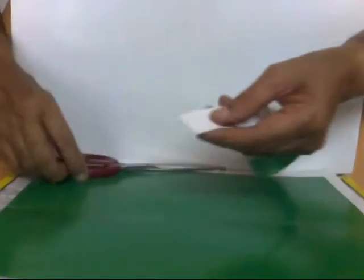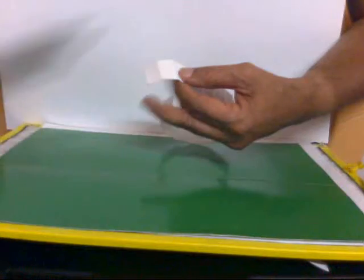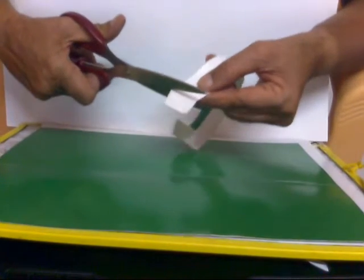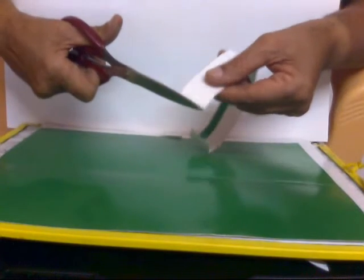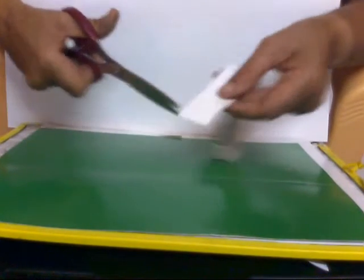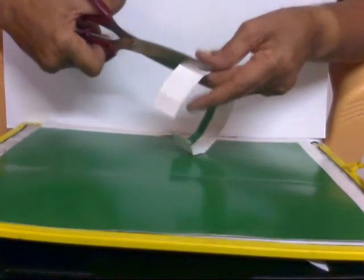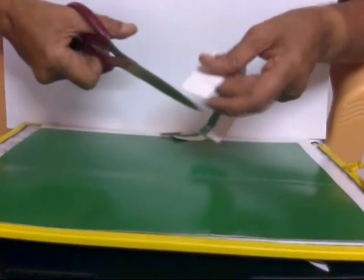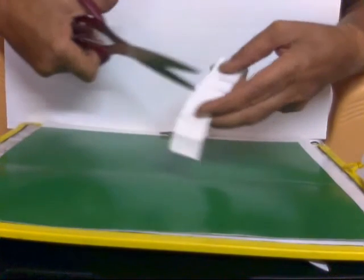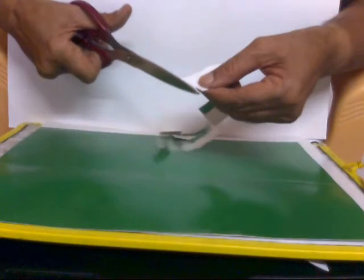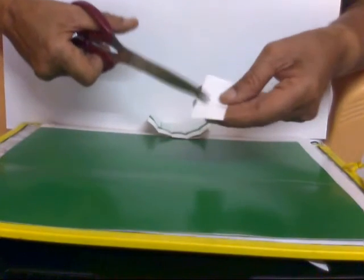Next what I do is take a pair of scissors and now cut one box and then one, two, three boxes. And then I cut one, two, three, four, five boxes and then cut seven boxes.